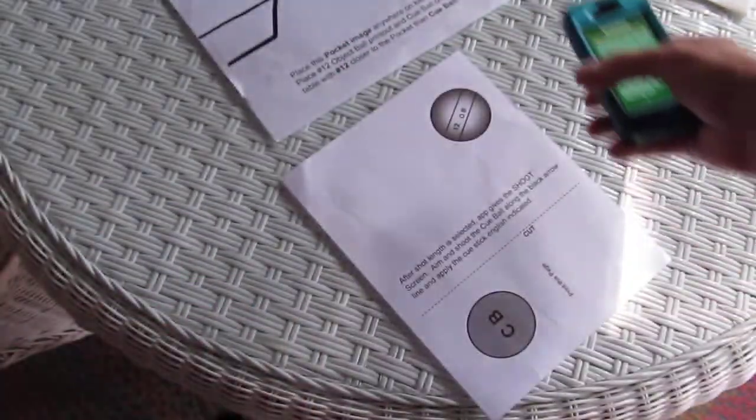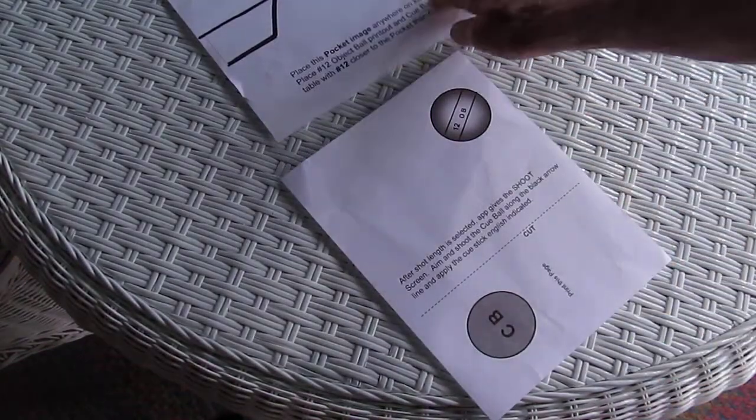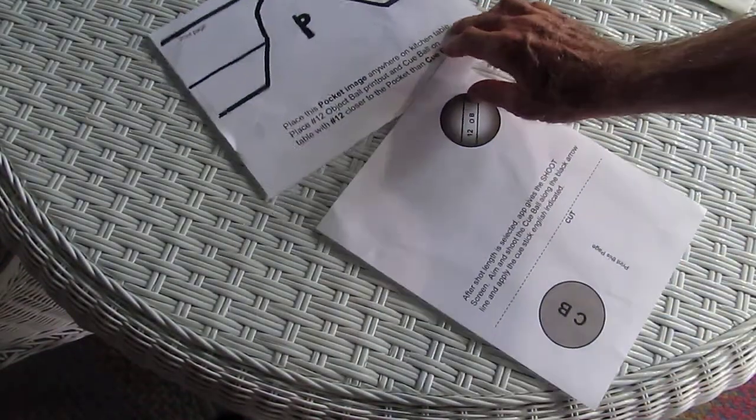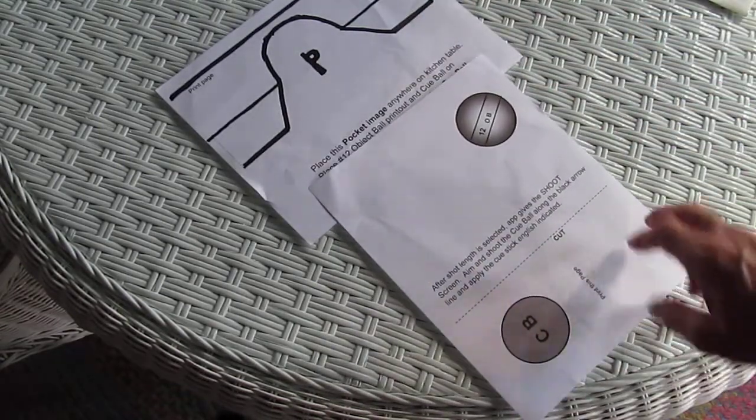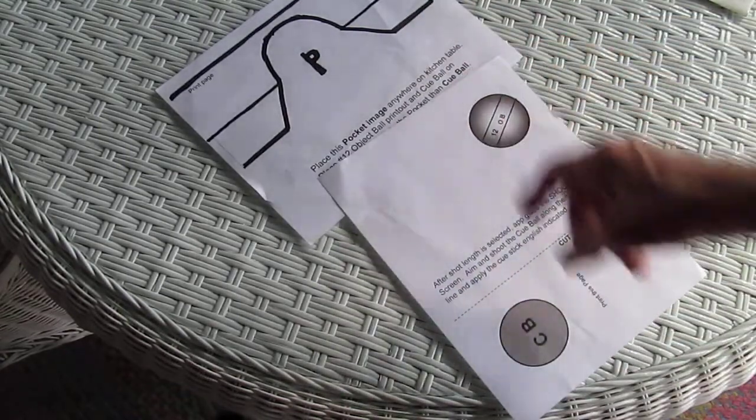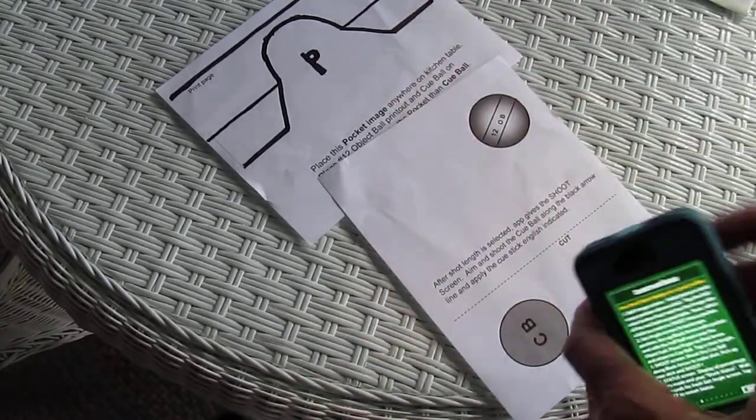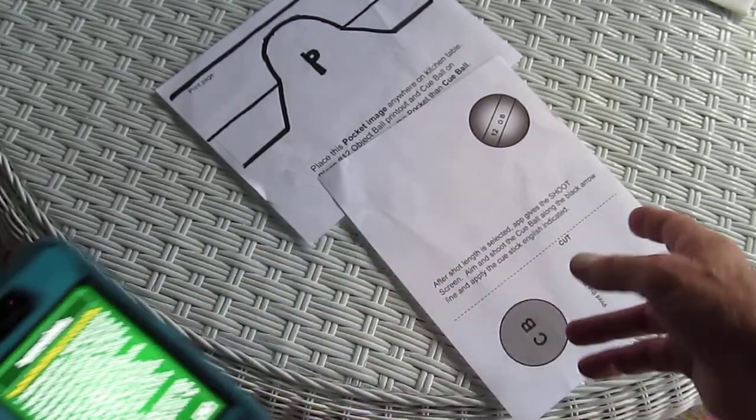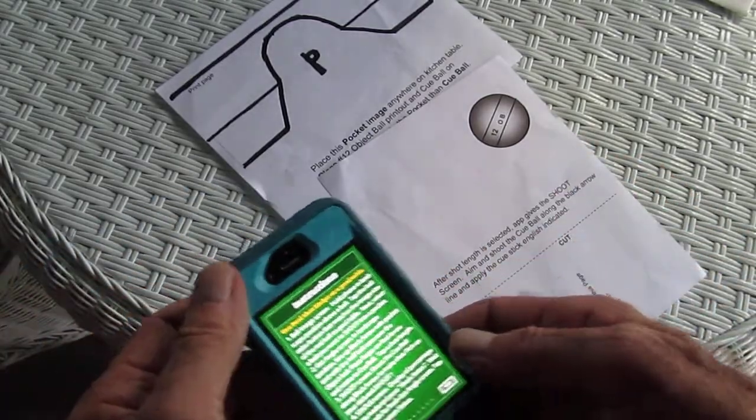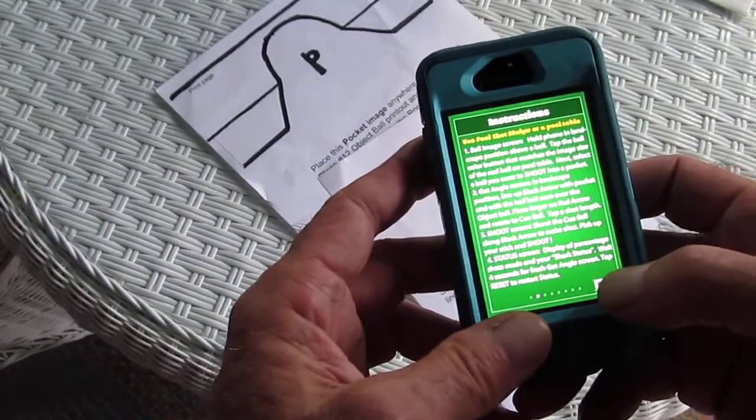So let's look at the app. I have a temporary table here which I put together just so that I can take a little video. Here we have an object ball, cue ball, and a pocket. Could be any pocket and this is a shot you chose to shoot. So let's get on with this.